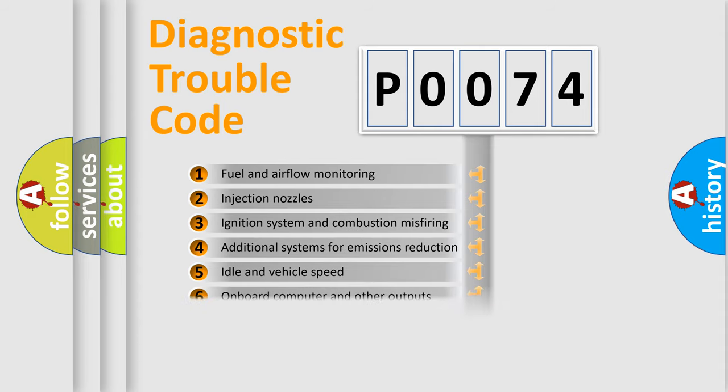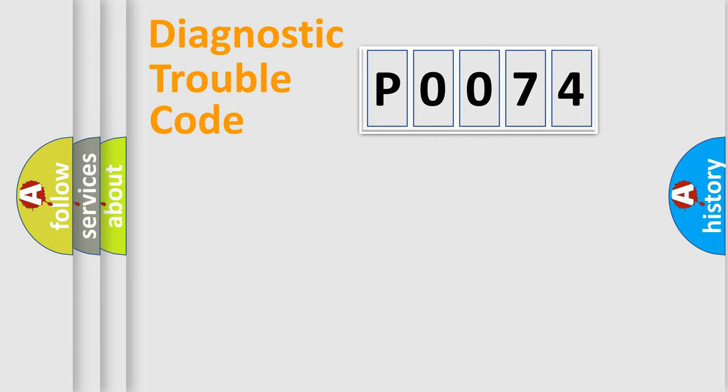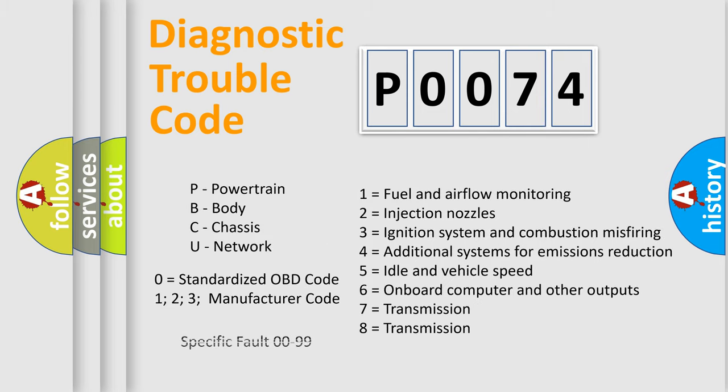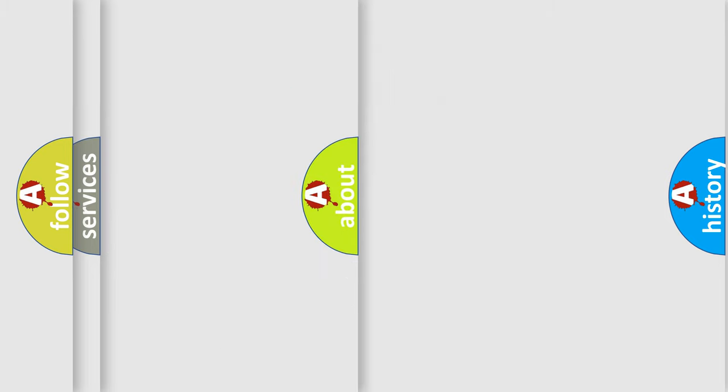The third character specifies a subset of errors. The distribution shown is valid only for the standardized DTC code. Only the last two characters define the specific fault of the group. Let's not forget that such a division is valid only if the second character code is expressed by the number zero.